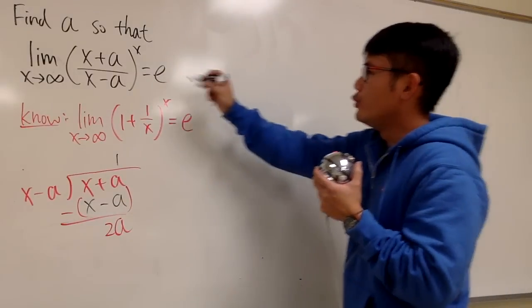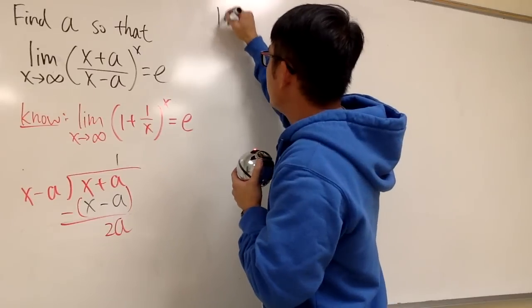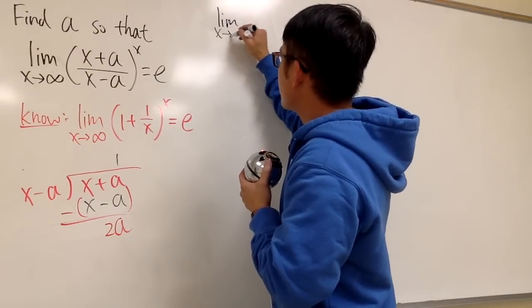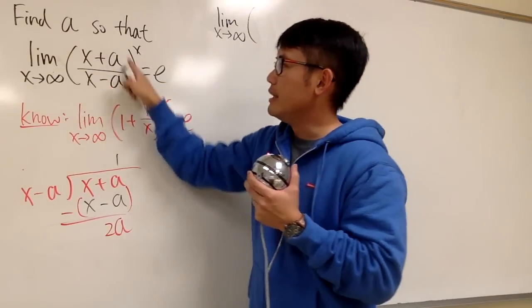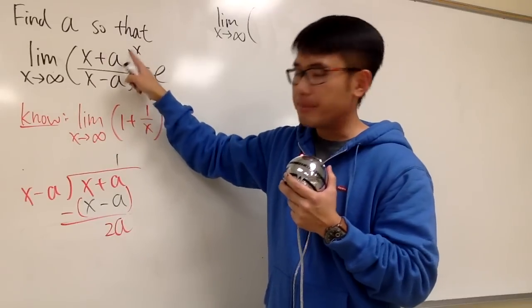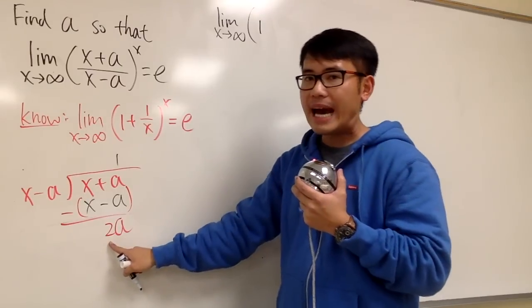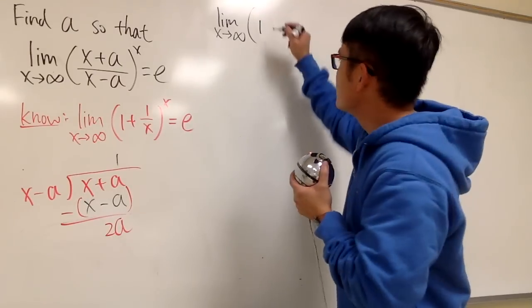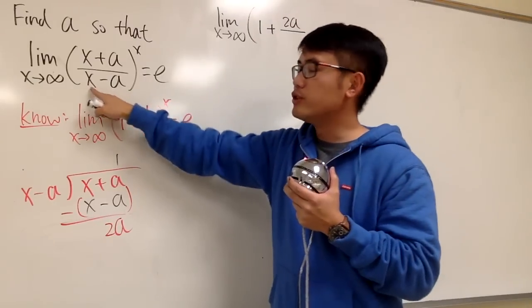And now, I'm going to rewrite this part again. So, let me write it down here. I will put this down as the limit as x approaching to infinity. For the inside, instead of writing this down, I can put this down as 1. And I'm going to add, because the 2a was positive.